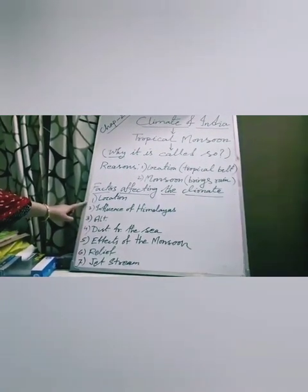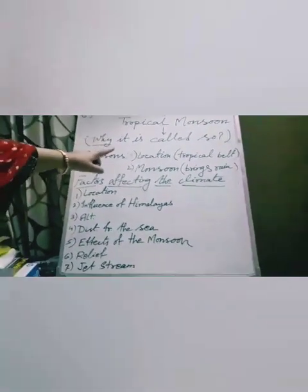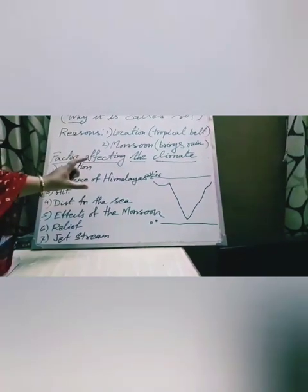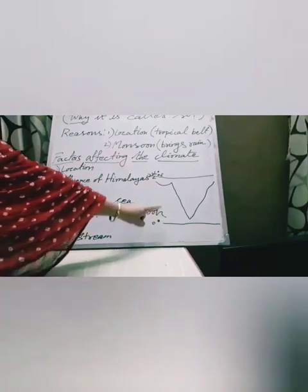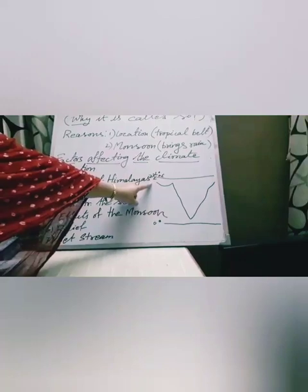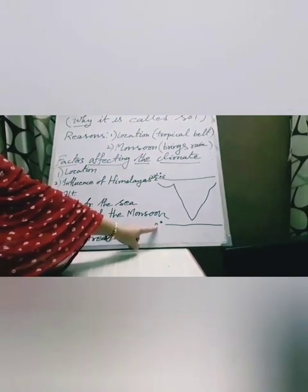Factor number one: location. India is situated or located in the tropical belt, meaning the equator is passing just at the bottom of our country, and the Tropic of Cancer is passing almost through the center part. So we can say our climate is tropical because it is located between 0 degrees and 23.5 degrees north. Here temperature is high and rainfall is also high, but comparatively less than equatorial areas.